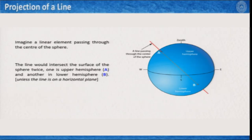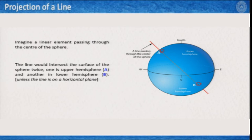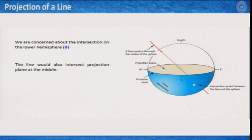Let us look at how to plot a line. The fundamental principle is: you have an inclined line, and you pass this line through the centre of the sphere and also through the centre of the primitive circle or projection plane. The line would then intersect the surface of the sphere two times — one at the upper hemisphere (point A) and one at the lower hemisphere (point B). Because we will be projecting on the lower hemisphere, we call it lower hemisphere projection, and we will be concerned only with point B.